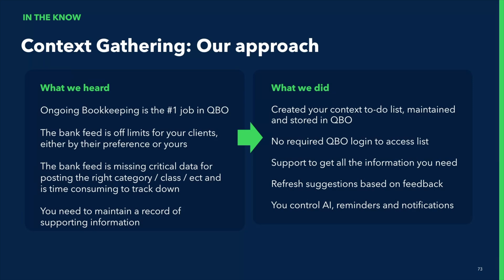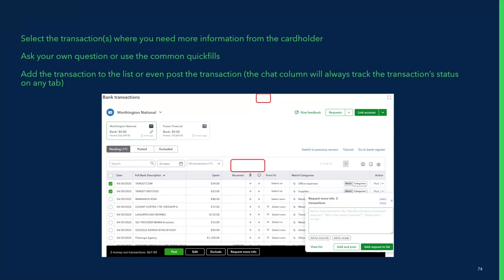So we built Accounting Agent's Context Request Tool as a to-do list of the missing information that needs to live inside QBO. Clients don't need a login. You control all the reminders, the questions, as well as how and whether AI helps. You can select one or more transactions on which to ask questions, use the chat column or group and select more info. You can ask a question on multiple transactions at one time, which is especially helpful for a client who might have a lot of checks. You can use the pre-fills for common questions, but you can always edit and ask your own question.